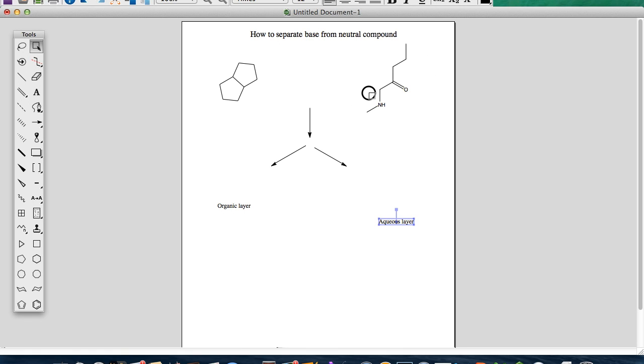So we're going to dissolve both of them in DCM, dichloromethane, and then we're going to use an acid, hydrochloric acid in aqueous solution. We use that to only react with our basic compound.